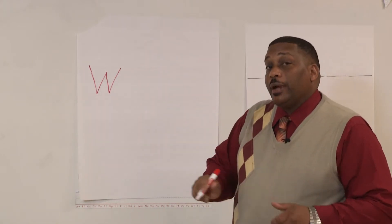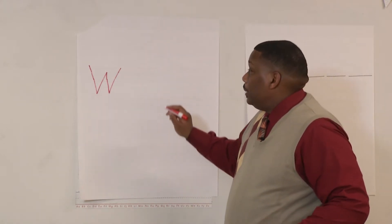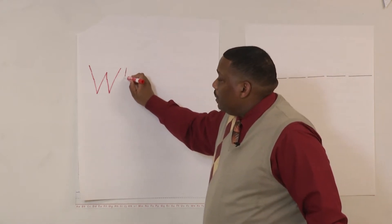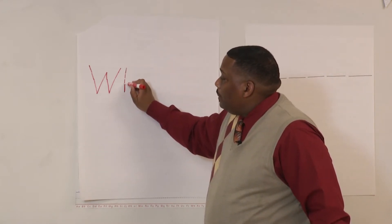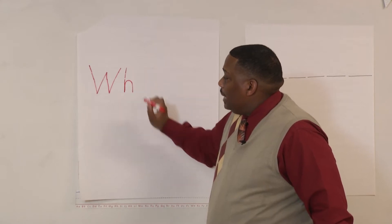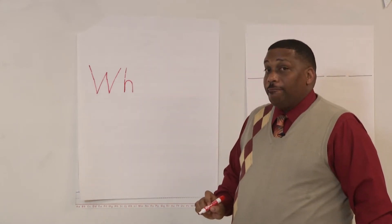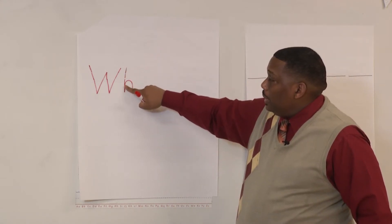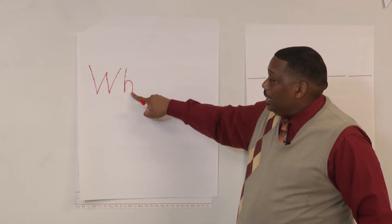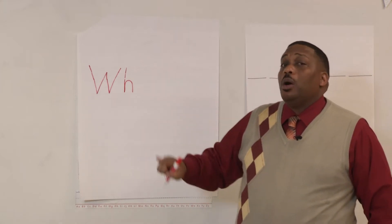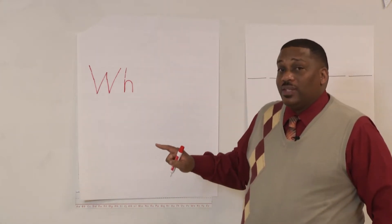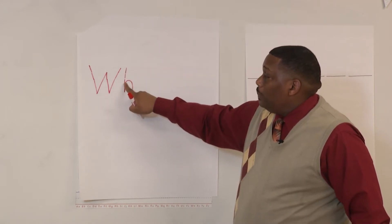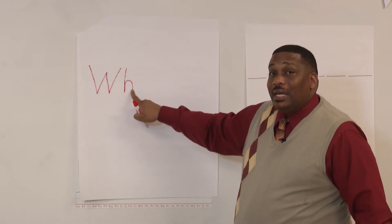Now let's practice the letter H. To make the letter H, we go down, straight line, up, and around, and down. Some teachers may say 'go over,' and if they say that, that's absolutely fine — down, up, over, and down.